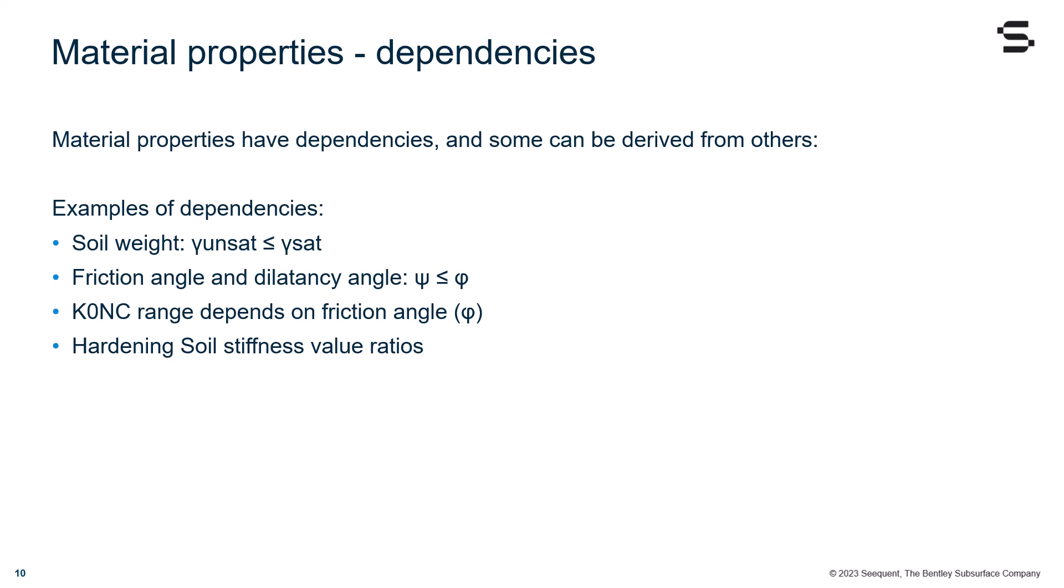In PLAXIS, the material properties have dependencies, and some can be derived from others. Examples of such dependencies are the following.